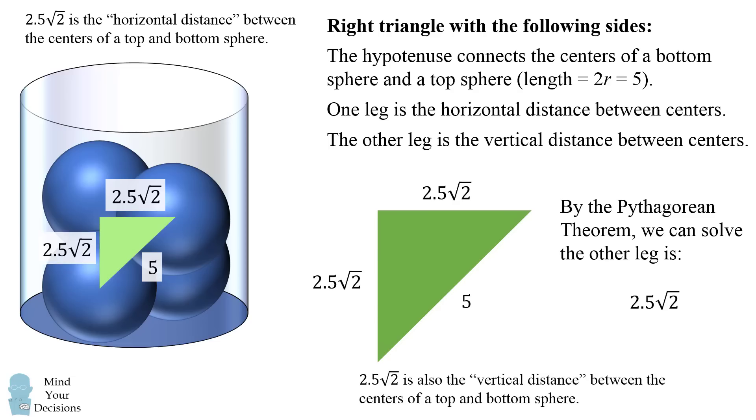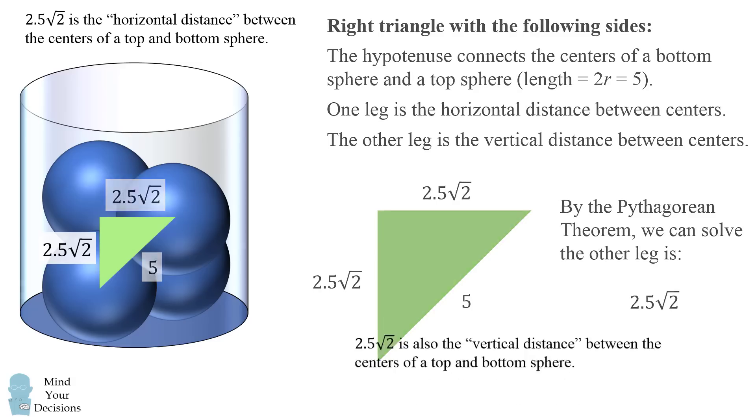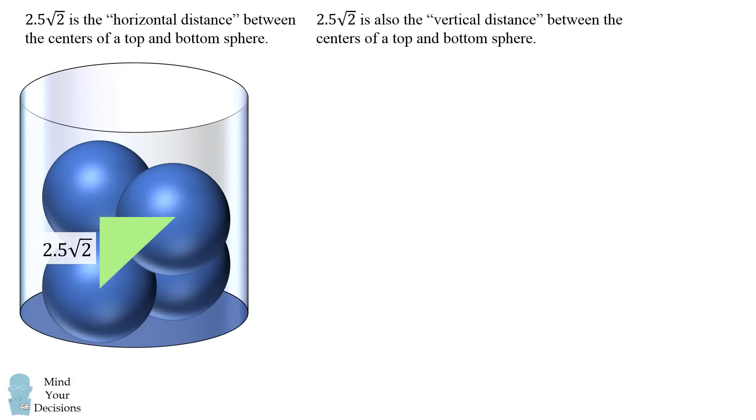So now, we figured out 2.5 times the square root of 2 is also the vertical distance between the centers of a top and bottom sphere.